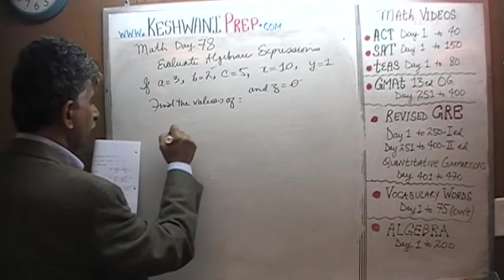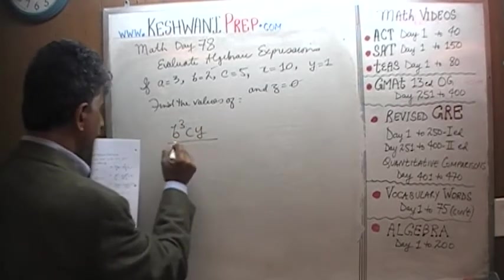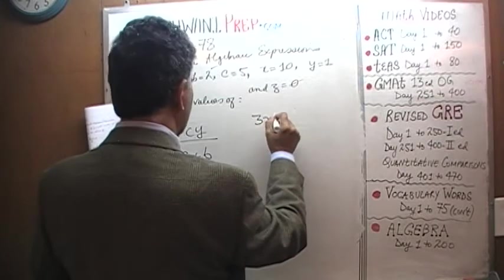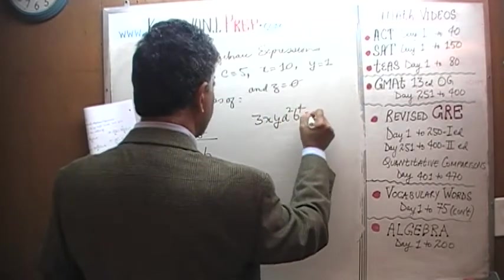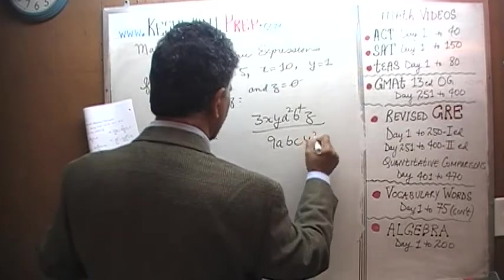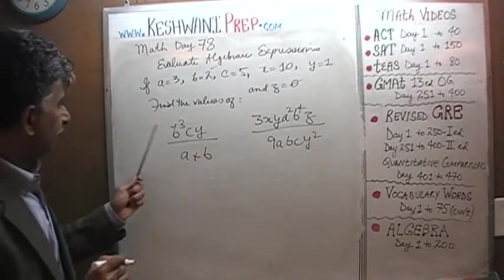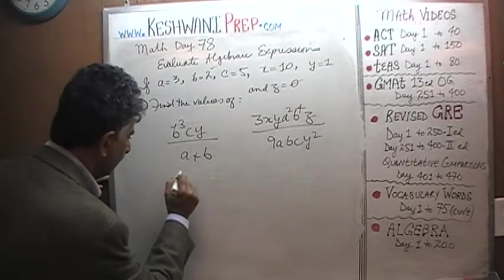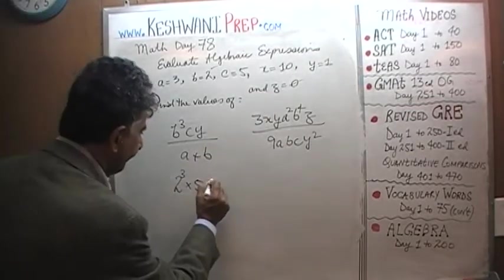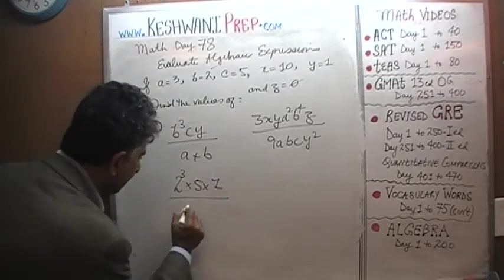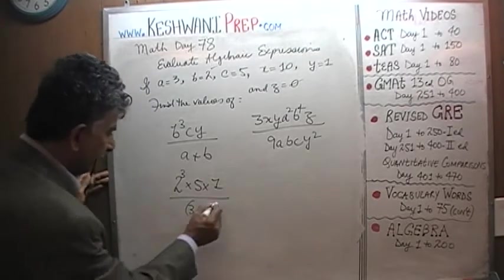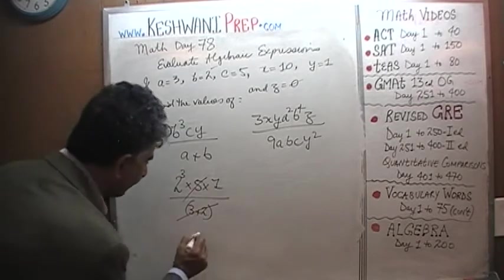The last two. B cubed times CY over A plus B. B is 2 so it's 2 cubed times C which is 5 times Y which is 1 over A plus B. A is 3 and B is 2. 3 plus 2 is 5. We see 5 at the bottom, we see 5 on the top, knock them out and it's just 2 cubed which is 8.